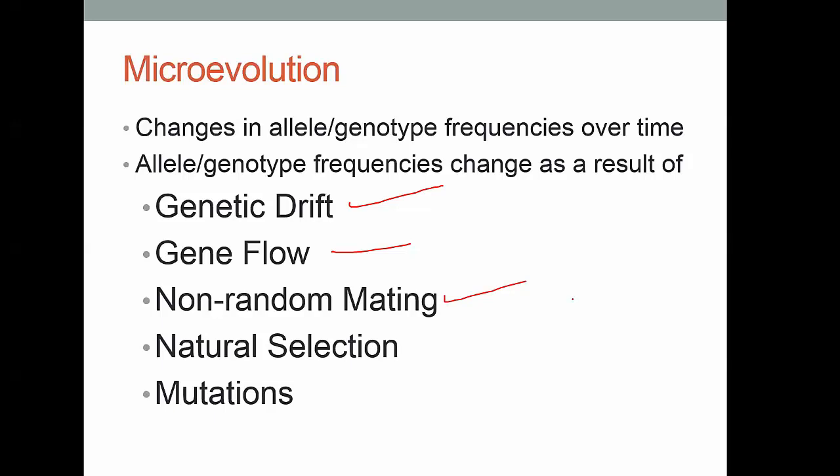Non-random mating is when organisms, let's say, only mate with those nearby, which might be closely related to them, or they only mate with organisms that have similar traits to them. That would be non-random mating. Natural selection is going to affect allele or genotype frequencies. That's when some organisms are better able to survive and reproduce than others. Mutations will also affect these frequencies. That's when new alleles arise because of errors in meiosis, for example.